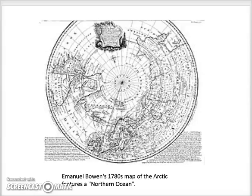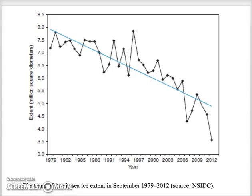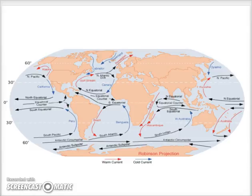We talked about the Arctic Sea and the shrinking of Arctic sea ice, which has been changing dramatically since 1970. Now we're going to move to southern hemisphere currents. In the southern hemisphere there are broad anti-clockwise gyres in the three oceans.